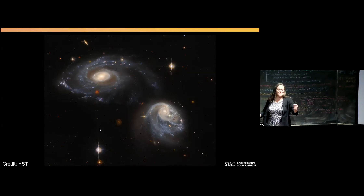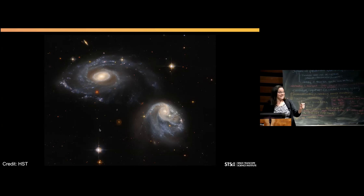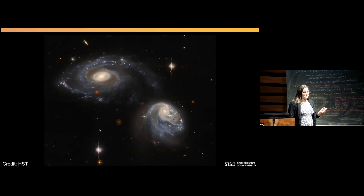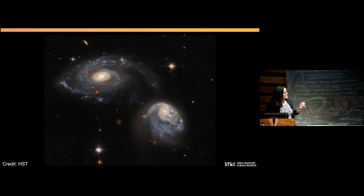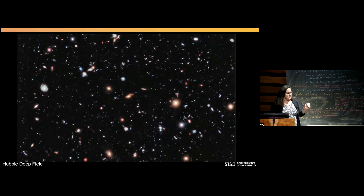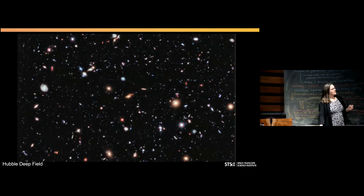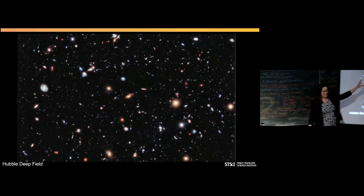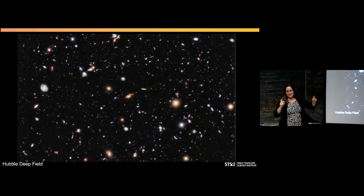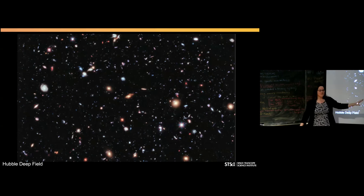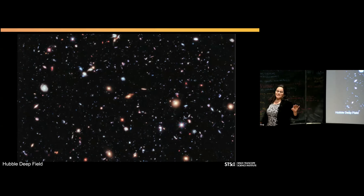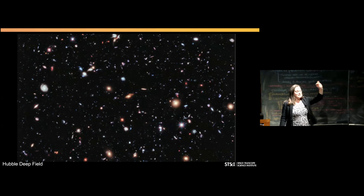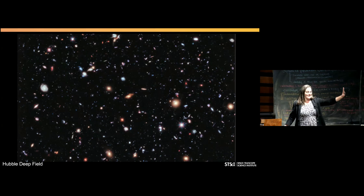If you looked even farther to a darker patch of sky — like the Hubble Space Telescope did — you might find something like the Hubble Deep Field from 2016 or 2017. Each one of these blobs you see — and that's a technical term — are galaxies, many of which are so far away that you're seeing them as the universe was 13 billion years ago.